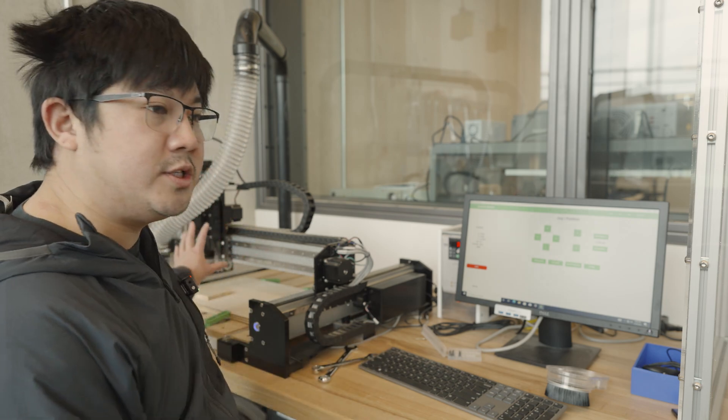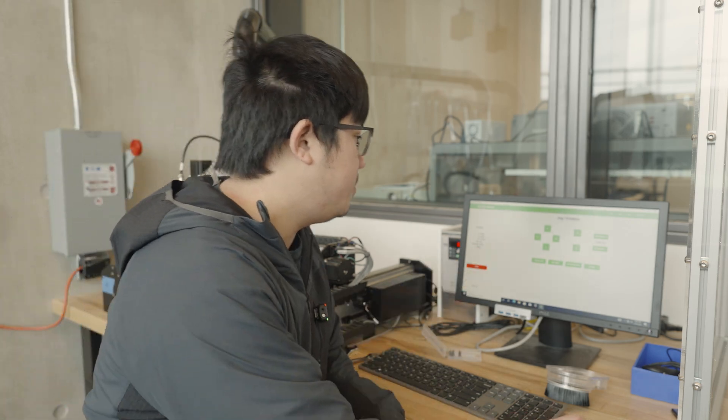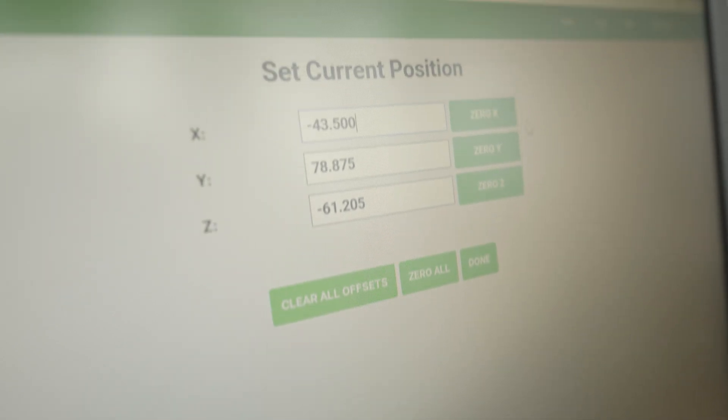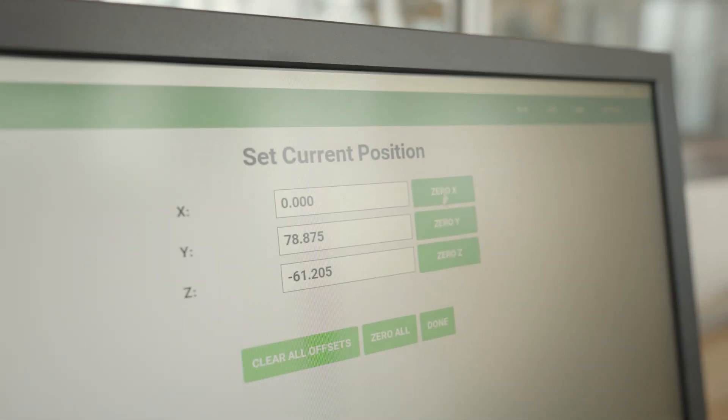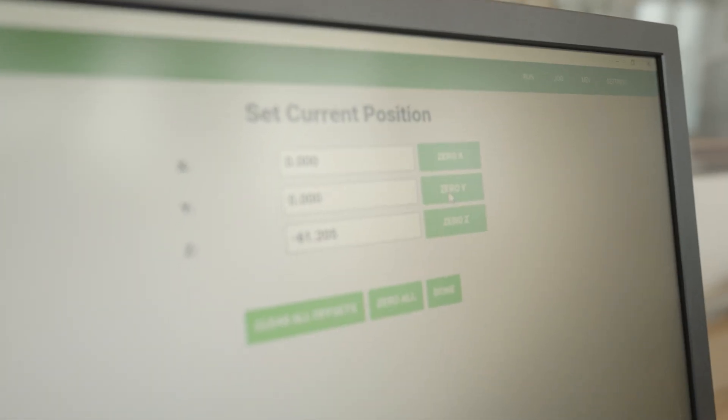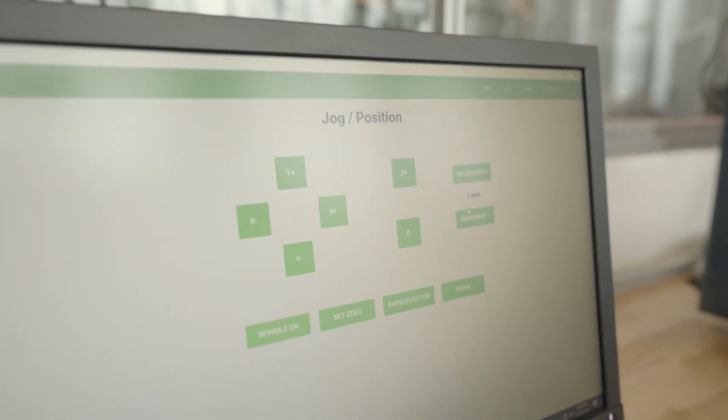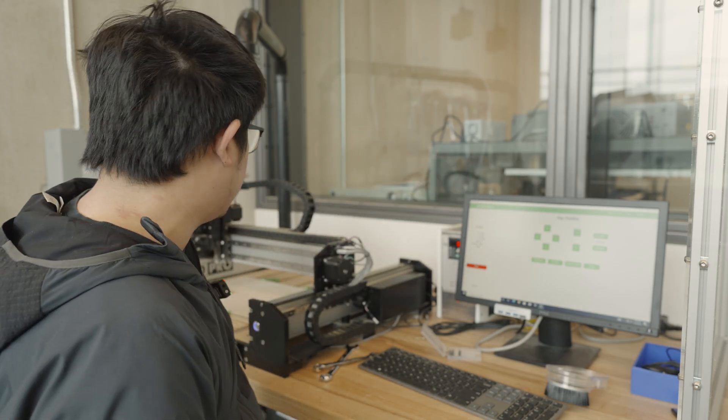Now, once you're happy with the tool position, you're going to be able to hit the set zero button and click X and Y zero, and then hit done. This will then set the zero, and then on the position screen to your left here, it'll say X zero and Y zero. You want to make sure that took, so that that zero is where the machine is, and that is where your part is. And once we're done with that, we're going to be able to do our Z zero.